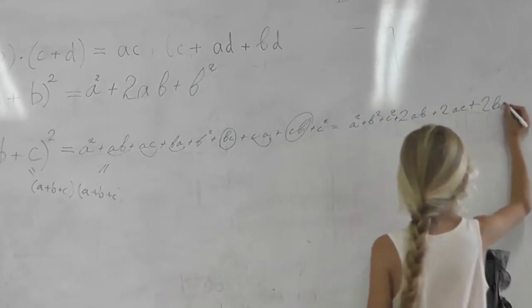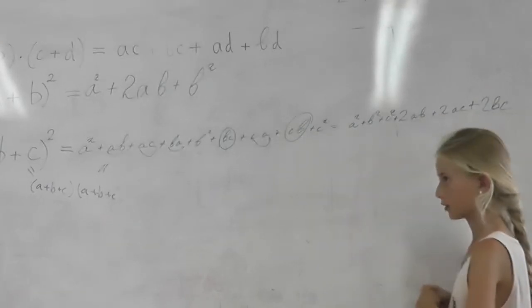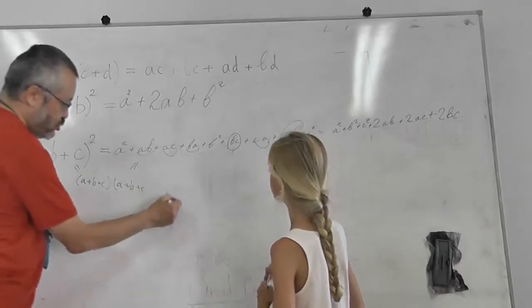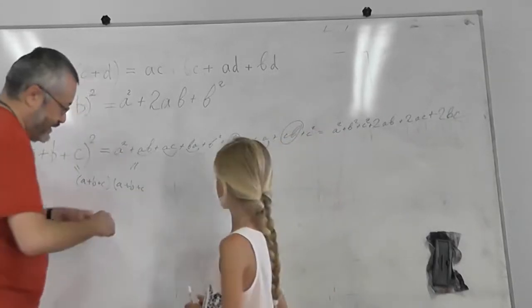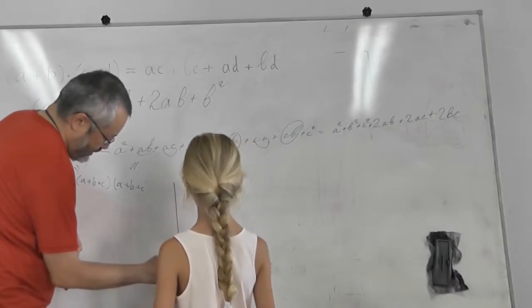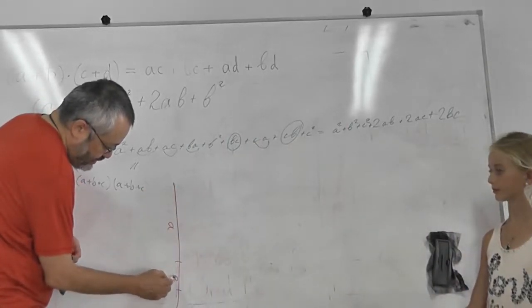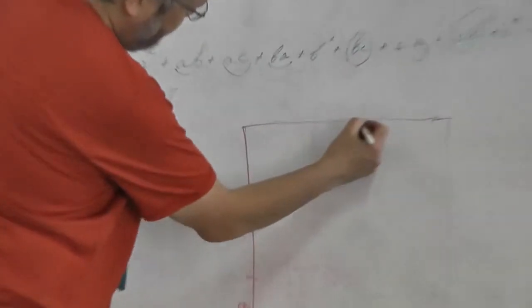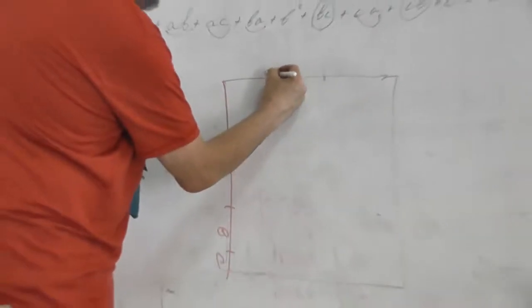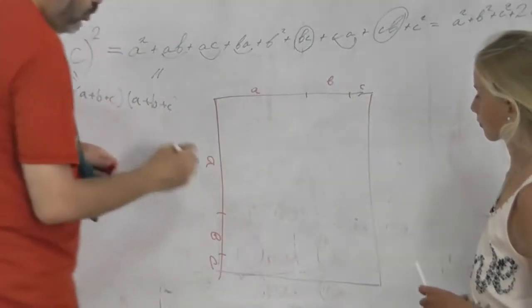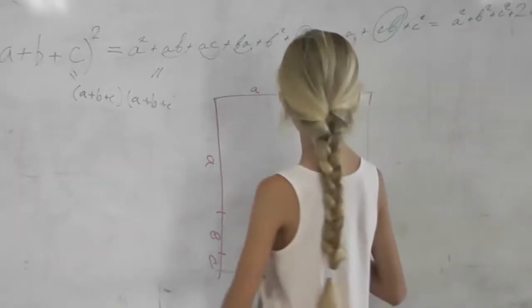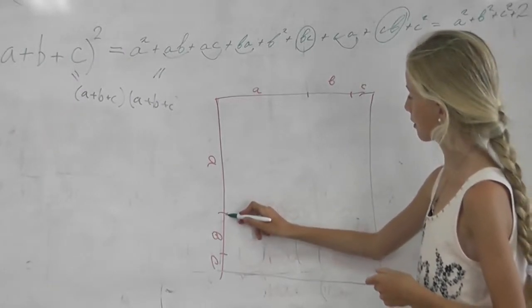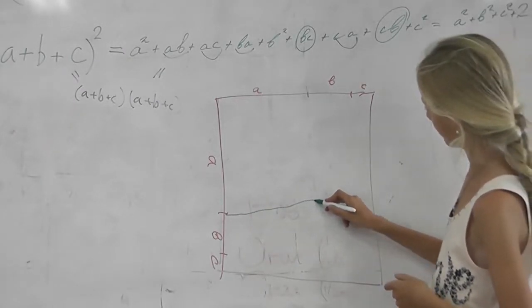And maybe now we can explain it geometrically. What kind of picture should one... We have (a+b+c)². So imagine we have... Let's see. (a+b+c)². So where are the pieces of this formula? How do we see them?